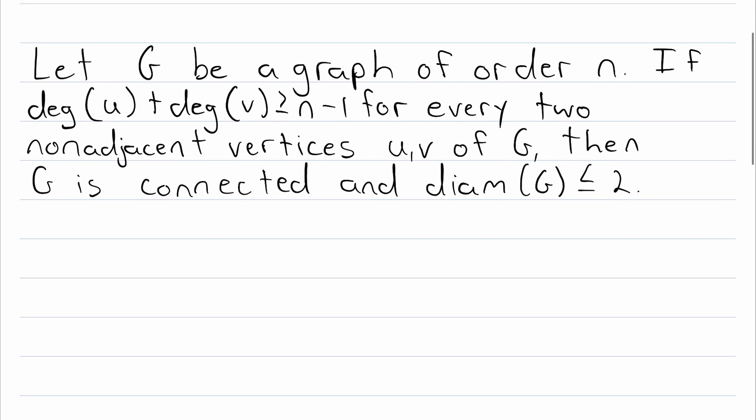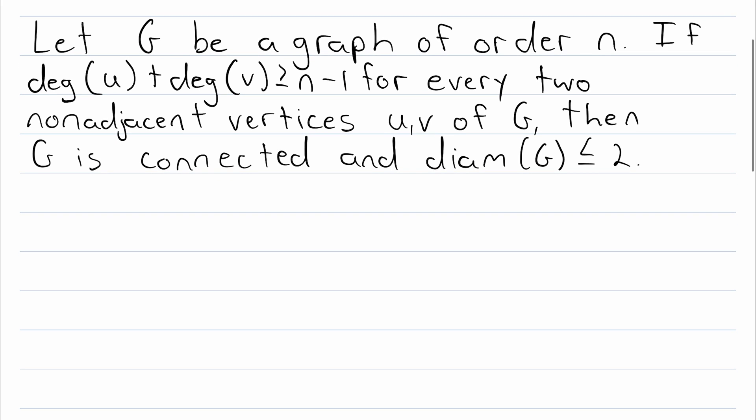For starters, we won't bother writing out our hypothesis, we're just assuming it. We're letting G be a graph with n vertices, and the sum of every pair of non-adjacent vertices in G is greater than or equal to n minus 1. Then to show that G is connected, we need to show that there is a path connecting every pair of vertices.